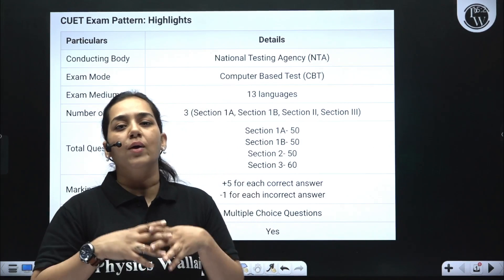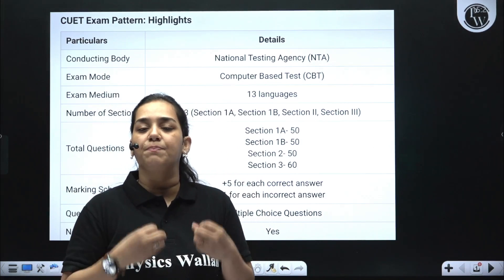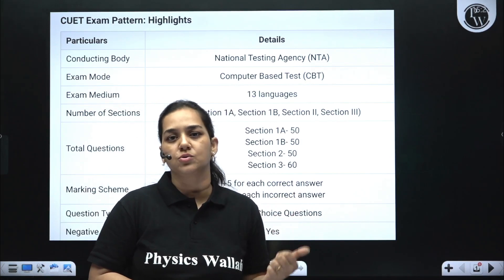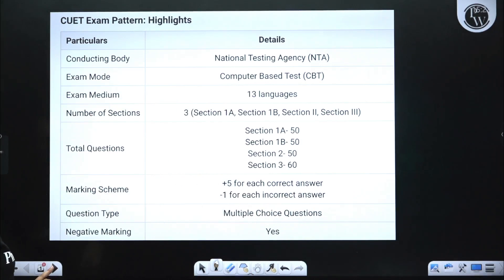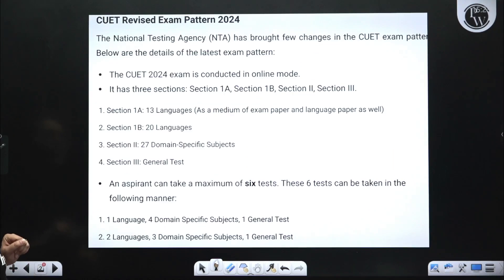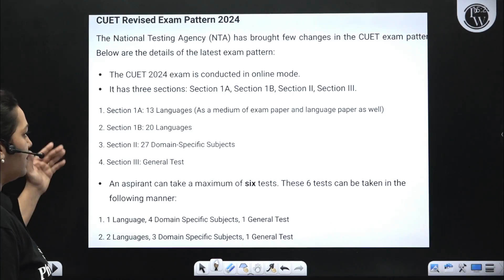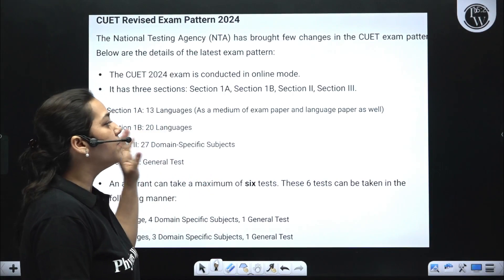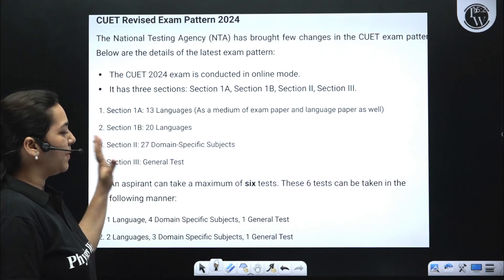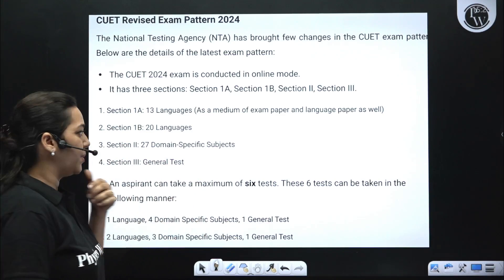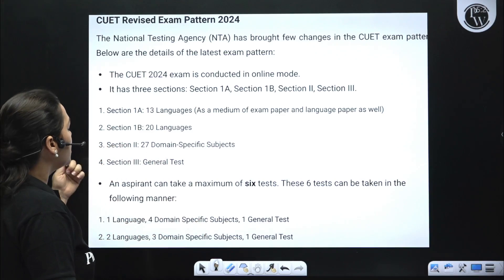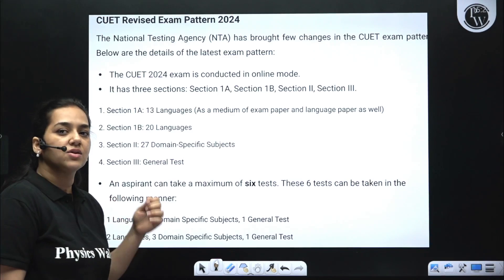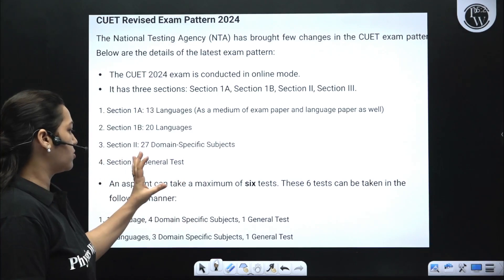Section 3 is common to every candidate, irrespective of what you have chosen in Section 1A, 1B or Section 2. To recap: Section 1A has 13 languages — whatever you select here will also become the medium of the exam paper and your language paper as well. Section 1B has 20 languages, Section 2 has 27 domain specific subjects, and Section 3 has a general test which is common for all.